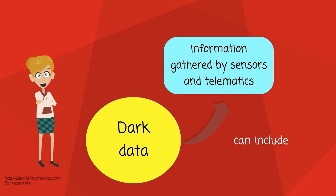In an industrial context, dark data can include information gathered by sensors and telematics.